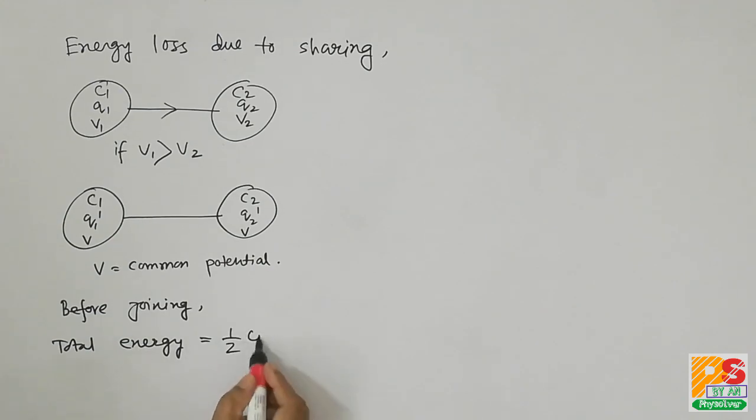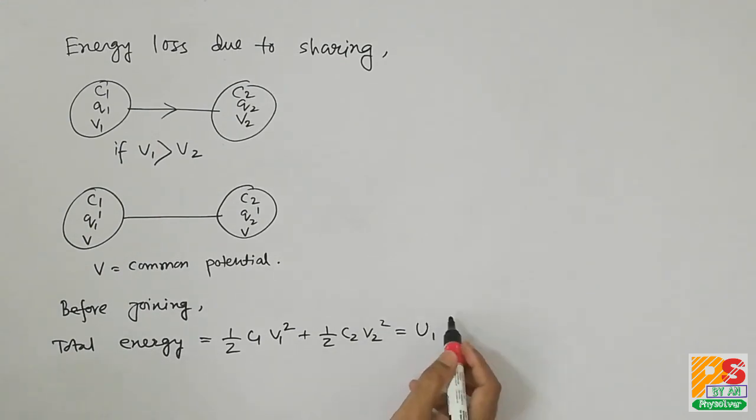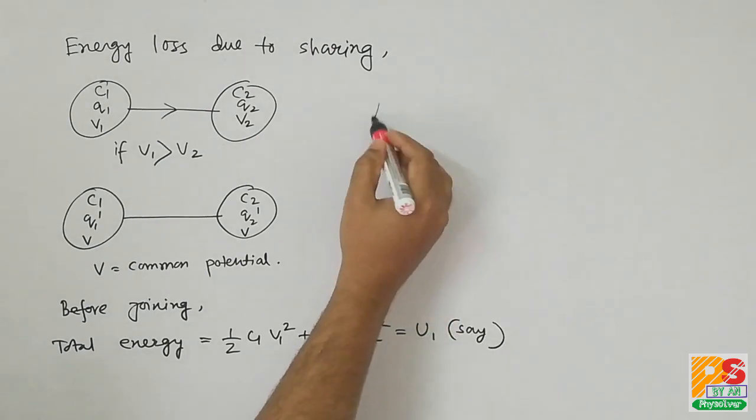Now before joining, total energy of the system is half C1 V1 square plus half C2 V2 square. We call it U1.